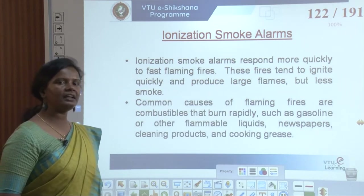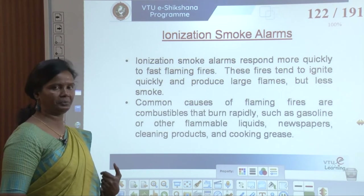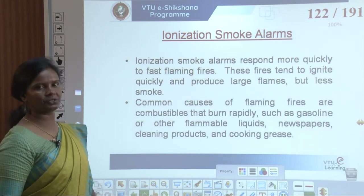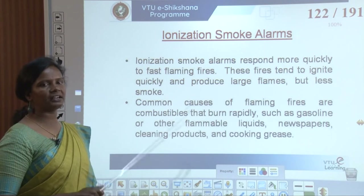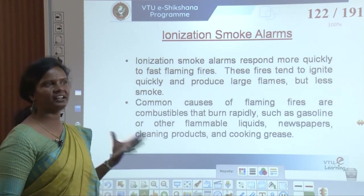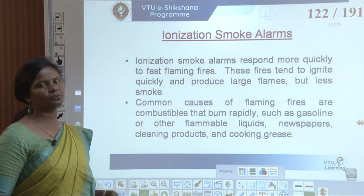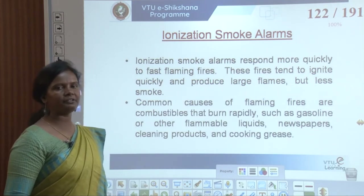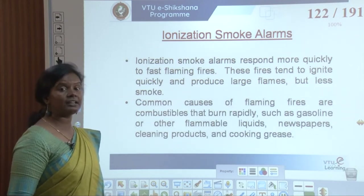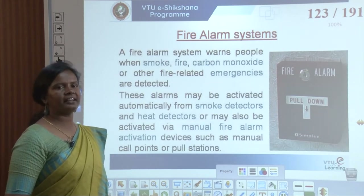Ionization smoke alarms respond more quickly to fast-flaming fires, such as class B fires where liquid and gaseous products are the source. These fires tend to ignite quickly and produce large flames with lesser smoke than smoldering fires. Common causes include combustibles that burn rapidly such as gasoline or other flammable liquids, newspapers, cleaning products, or cooking grease.